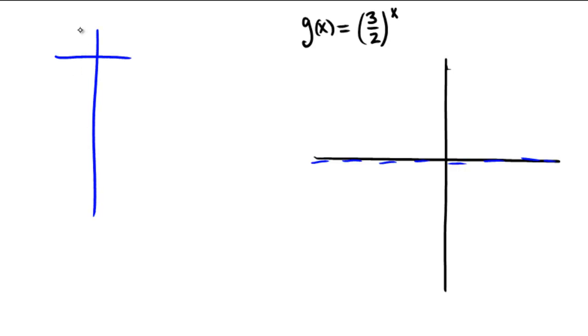When we make our t-table, x and g of x, we will plug in the same values as we did last time. Let's plug in a 0, 1, 2, negative 1, and negative 2.